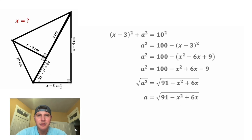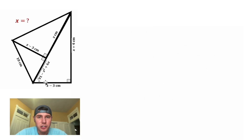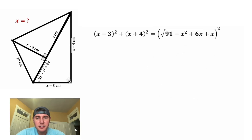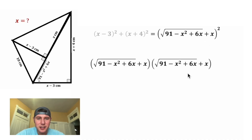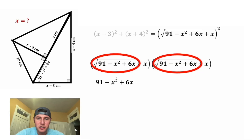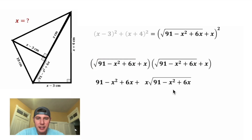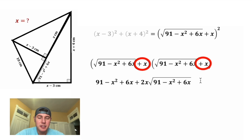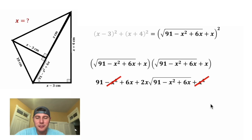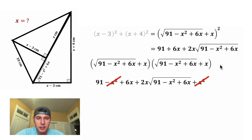So let's update a to be that, and now we're ready to do the Pythagorean theorem for the larger triangle. It'll be (x minus 3) squared plus (x plus 4) squared equals all of this stuff squared. Let's clean up the right-hand side first. Squaring that expression means multiplying it by itself, so the square and square root cancel, the x times square root terms give us 2x times the square root, and the x squared terms — negative x squared and positive x squared — cancel each other out.